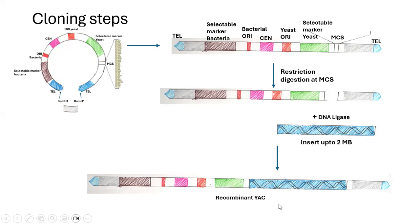The next step is the transformation reaction, which is generally done by electroporation. In the case of yeast artificial chromosomes, electroporation is a suitable method since the constructs are quite large and are difficult to transform by other methods.